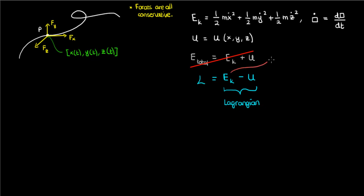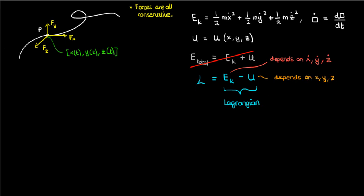Because the kinetic energy depends on the velocities of the particle — x-dot, y-dot, and z-dot — and because the potential energy depends on the position of the particle x, y, and z, we can say that the Lagrangian of the particle depends on all the positions and their time derivatives.